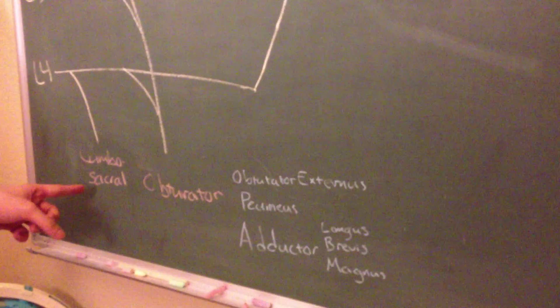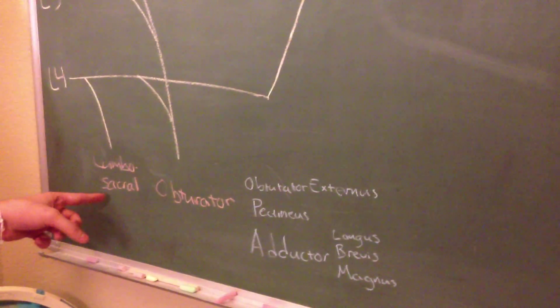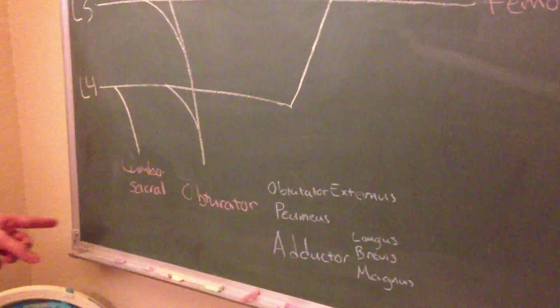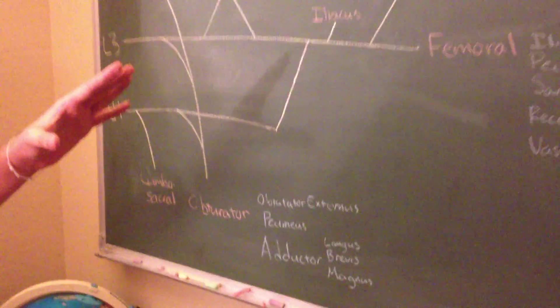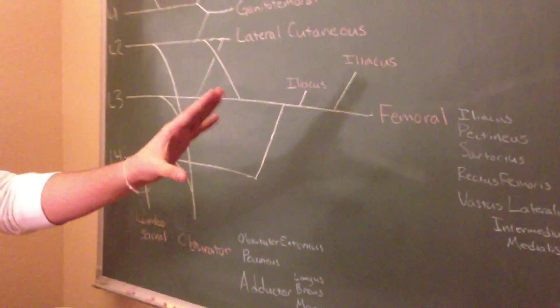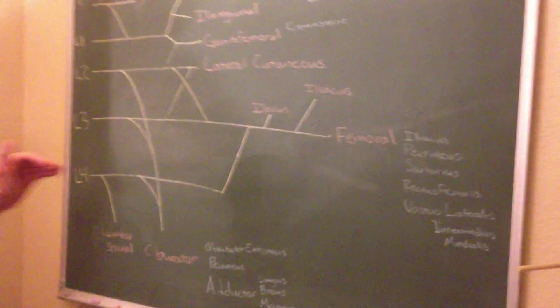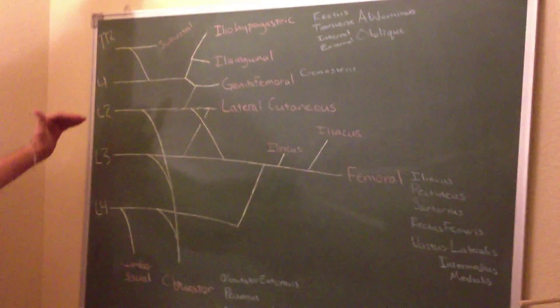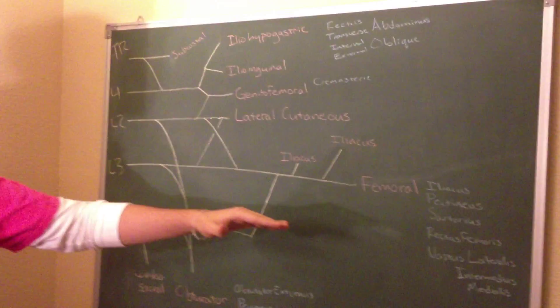And this branch off of L4, the lumbosacral nerve, is our connection into the sacral plexus. If you want to know the dermatomal innervations of any of these nerves, and the muscles that they serve, all you have to do is follow the flow of any of these branches.